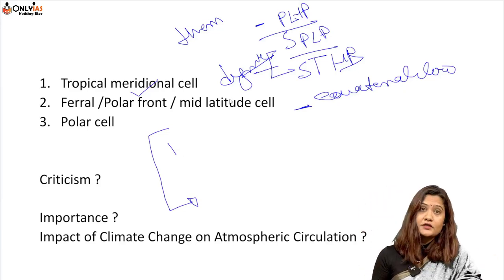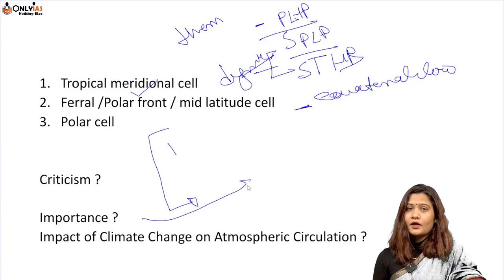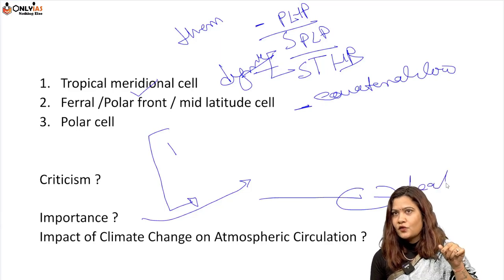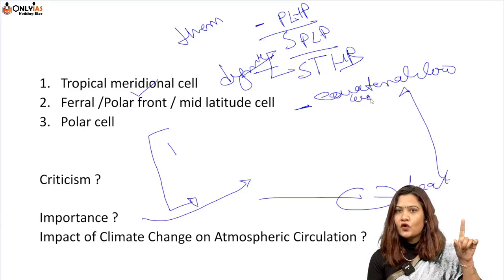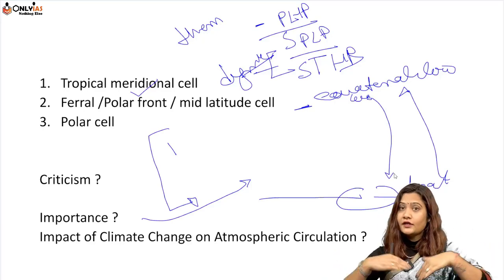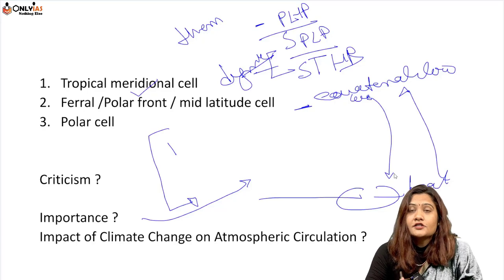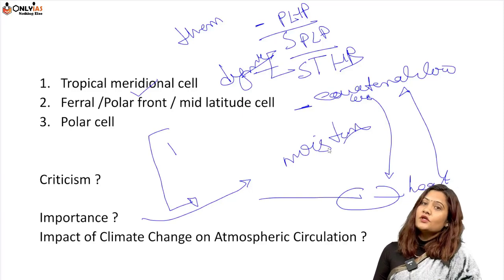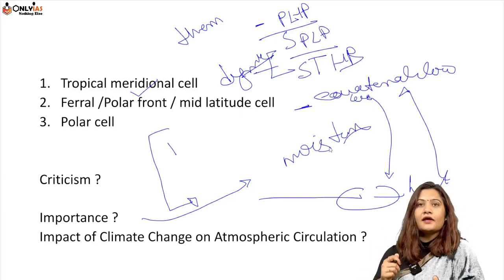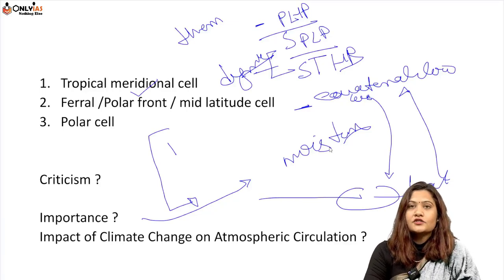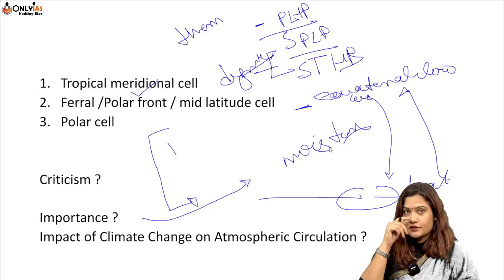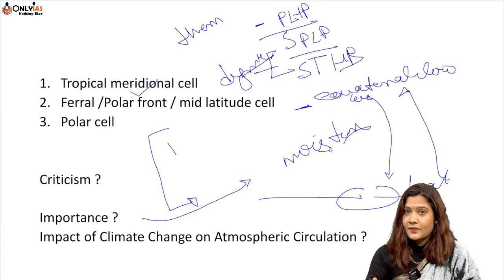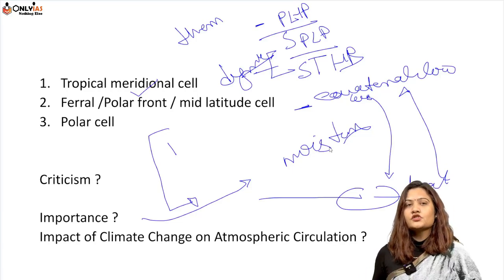Importance: the equatorial heat is transported to the polar area, and polar coldness is transported toward the equator — this heat redistribution is crucial. Moisture also gets redistributed with this heat through atmospheric circulation, which drives ocean currents, creates different world climates, influences local weather conditions, and drives jet streams. Now we will see jet streams and the impact of climate change on atmospheric circulation.